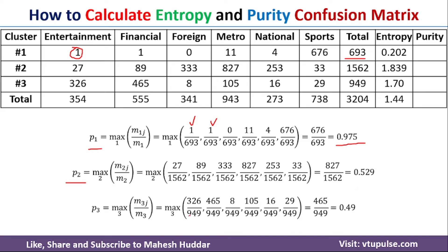Similarly, we calculate P3, the purity for Cluster 3: max of (M_3J / M_3). Once you solve this equation, you get 0.49 for Cluster 3.